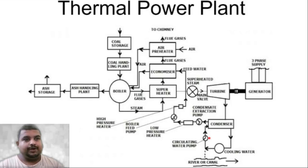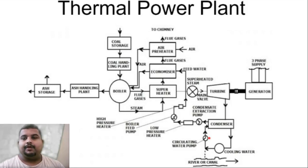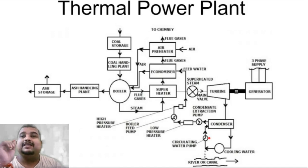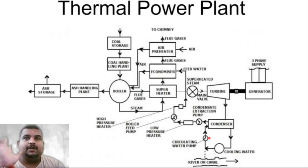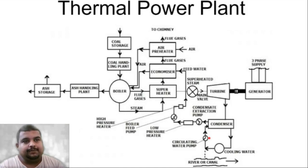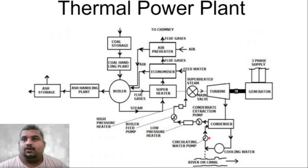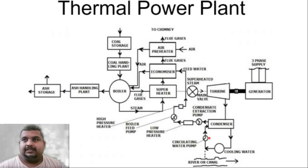Today we are going to start with our second lecture on thermal power plants — understanding how a thermal power plant works. We are going to learn about the schematic diagram of a thermal power plant. The ultimate outcome of a thermal power plant is electricity, and I'll use the laser pointer to show that we are supposed to reach here — the three-phase supply coming out of the generator.